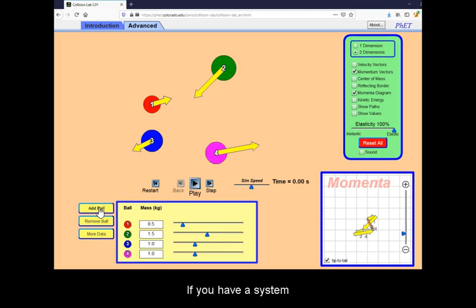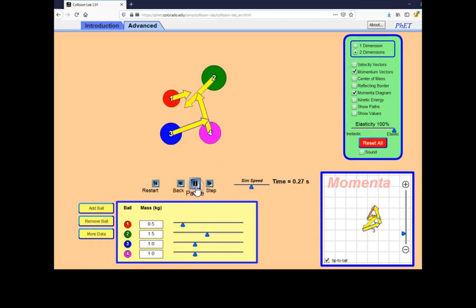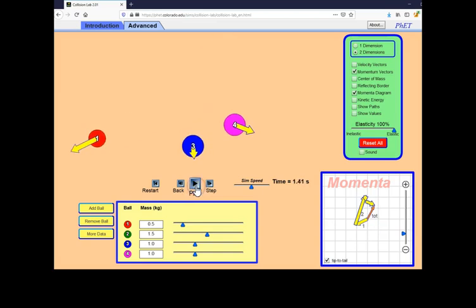If you have a system of more than two balls and you make them collide, watch the momentum vector yet again. Again, the total momentum remains the same.